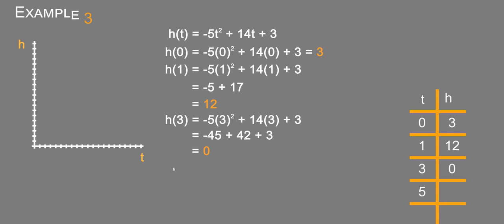At 5, -5(5)² + 14(5) + 3. That equals 5 squared is 25 times -5 is -125 plus 73, which equals -52.